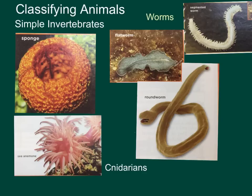Again, these are the lower invertebrates: sponges, cnidarians, and worms. Sponges are asymmetrical, meaning no symmetry. Cnidarians have radial symmetry, which means they are arranged around a central point like a circle. And worms have bilateral symmetry, which means they have one plane that divides them into two mirror images. Now let's discuss the more complex invertebrates.